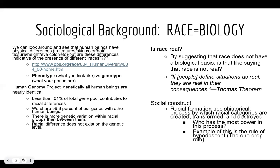Just because we know that genetically race doesn't exist, and the racial categories we created don't align with our level of genetic differences, we shouldn't expect those racial categories to magically disappear. Race is discussed as a social construct created through the process of racial formation — the socio-historical process by which racial categories have been created, transformed, and destroyed — with dominant groups having more power in this process than subordinate groups.